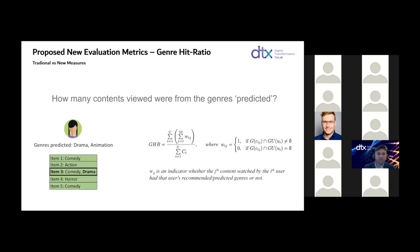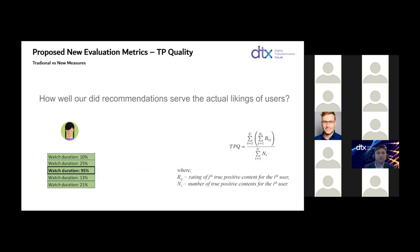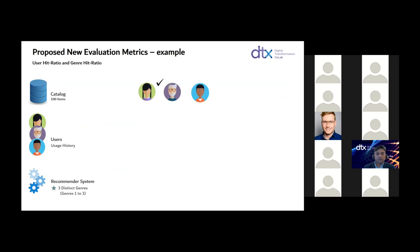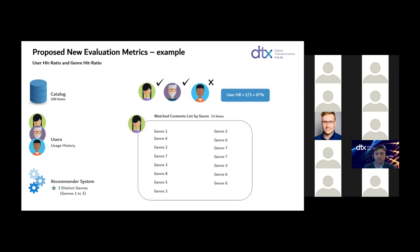The second evaluation metric is genre hit ratio: how many contents viewed were from the genres predicted. For example, if we predicted a user likes drama and animation, and out of five items watched by the user one had the predicted genre of drama, this gives us the genre hit ratio. Genre is our main feature, so it is important to measure how well our feature selection worked. For typicality — how well the recommended contents that were already viewed were liked by the user — since we have no user interaction in the offline setup, we calculate this by visualization quality, i.e., for how long the user watched the content. This is measured through the TP quality metric, or true positive mean quality.